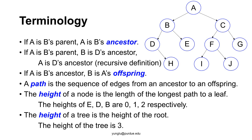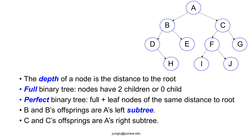The height of a node is the length of the longest path to a leaf node. If a node is a leaf node, by definition its height is zero. In this example, E is a leaf node and its height is zero. D has one child H and H is a leaf node, so D's height is one. B's height is two. The height of a tree is the height of the root node. In this example, the tree's height is three. The depth of a node is the distance to the root. The depth of C is one. The depth of J is three.